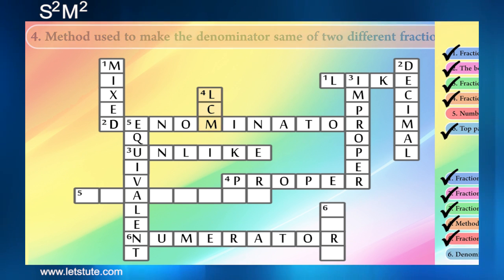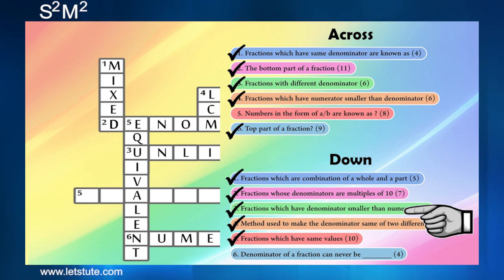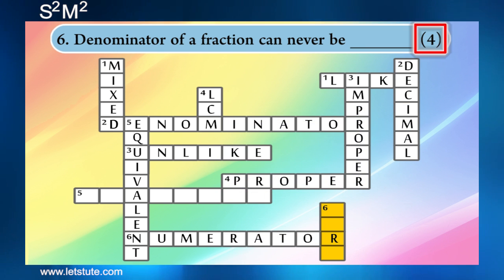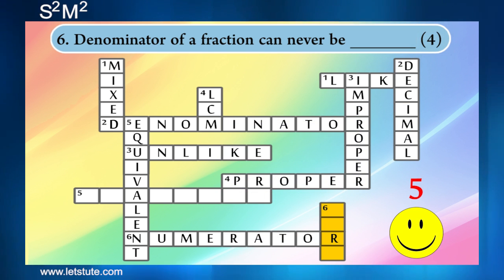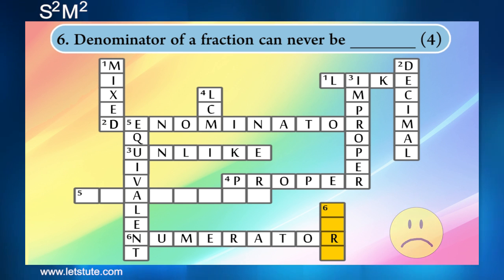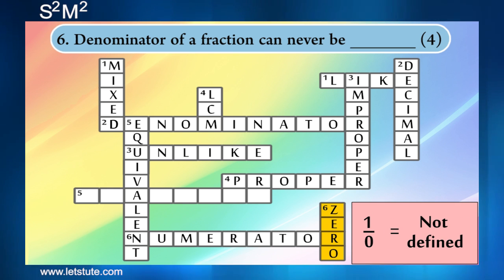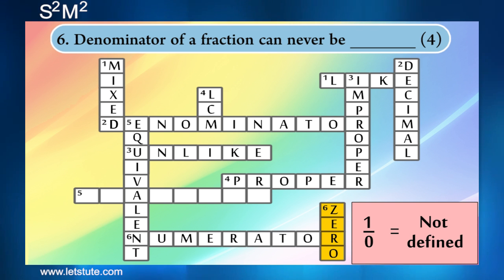Let's see the second last question, and it says the denominator of a fraction can never be — what do you think? The answer is zero. As we have learned in our first video, the denominator of a fraction can never be zero, otherwise the fraction will be not defined.